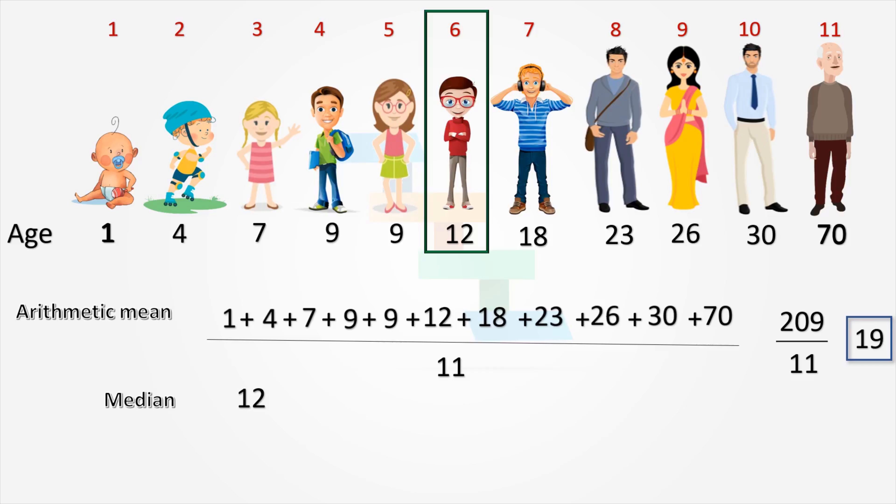Next, we need to find the mode. Mode is nothing but most often repeating data points. Here, we found that 9 is repeating more than once and it is the most often repeating number in this data set. So 9 is the mode.